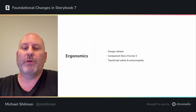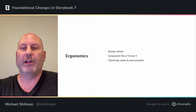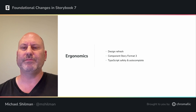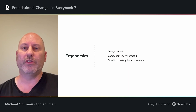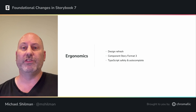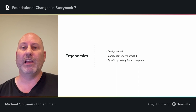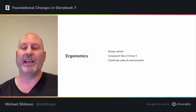Today I'm going to talk about three ways we're improving ergonomics in Storybook 7. I'll start with our design refresh, which cleans up a lot of things in Storybook's UI. Then I'll introduce Component Story Format version 3, which is a better way to write stories. And finally, I'll talk about better TypeScript support, which makes it faster and easier to write those stories correctly.